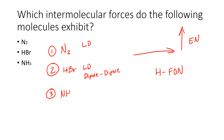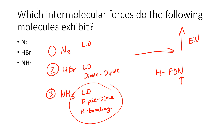NH₃: London dispersion — yes. Dipole-dipole — yes, because nitrogen is highly electronegative, way to the right and up on the periodic table, so it really wants those electrons. Hydrogen bonding — yes! Hydrogen is bonded to nitrogen, which qualifies. Of all three molecules, NH₃ has the highest boiling point because it has all of these intermolecular forces, so you must put in lots of energy to overcome them in order to boil it.